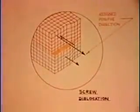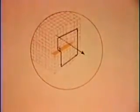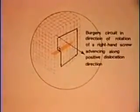The Burgers circuit lies on one twist of the screw or helicoid. The Burgers Vector of the screw dislocation is the pitch of the screw and is thus parallel to the dislocation line.